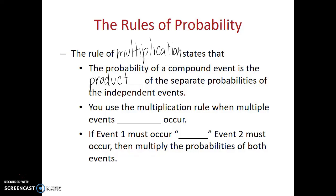The rule of multiplication states that the probability of a compound event is the product of the separate probabilities of the independent events. The term product means the result of multiplication. We use the rule of multiplication to find the probability of a compound event — an event that requires multiple things to happen — by simply multiplying the probabilities of each independent event. You use the rule of multiplication to multiply events which must occur.